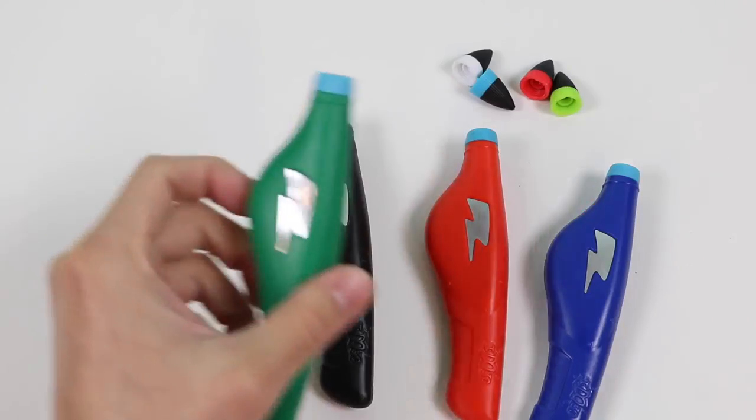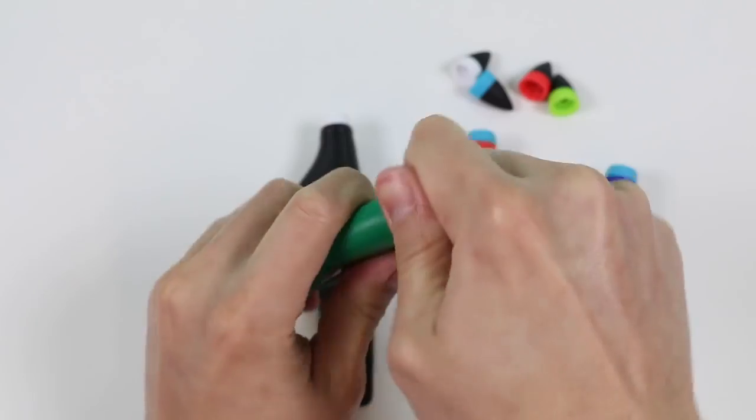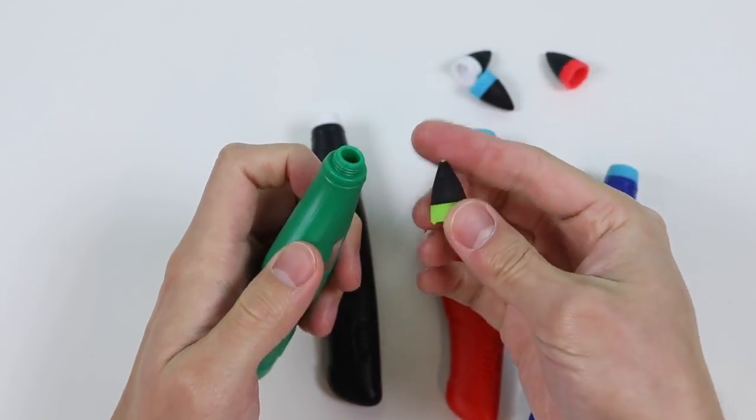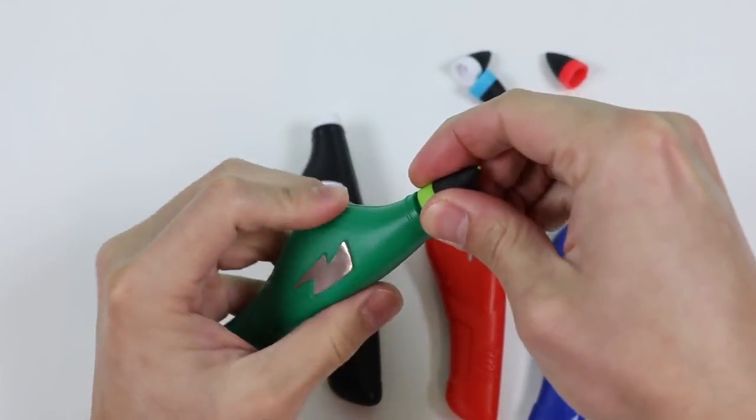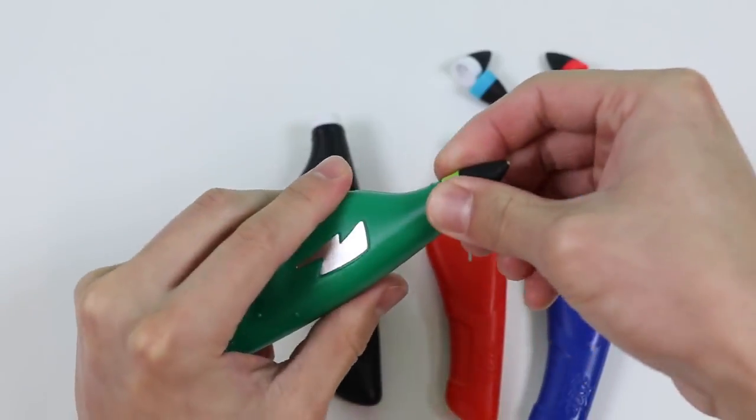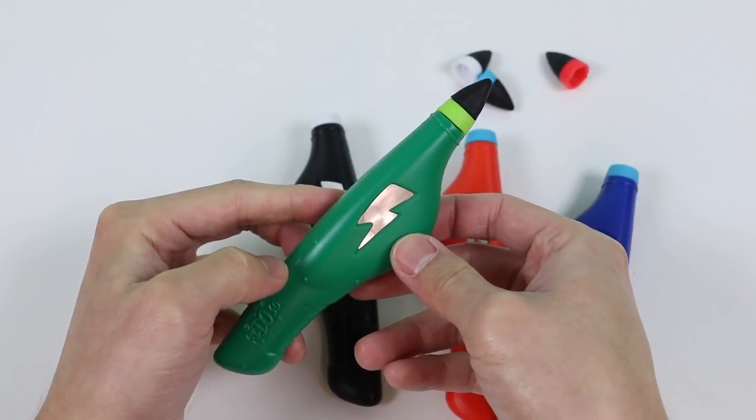Okay, so to start, we need to pick one color to use, so I'll go with green. And then we'll need to attach the pen tip. Twist it. And perfect! Now let's do the same thing for the rest of the 3D pens.